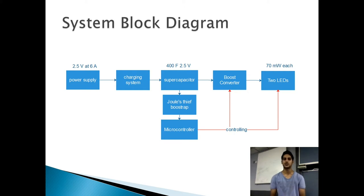Our power supply is at 2.5 volts at a rated current of 6 amps. Our super capacitor is at 400 Farad at a rated voltage of 2.5 volts. And our output comprises of two white LEDs, each with 70 milliwatts.